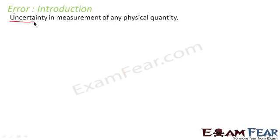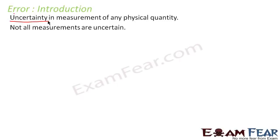Any uncertainty in measurement of a physical quantity is error. To understand why certain measurements are uncertain, consider a simple example: if I ask you to count the number of people present inside a room, you can just count the number of heads and tell me there are 20 people present. So there is no question of uncertainty in that measurement.